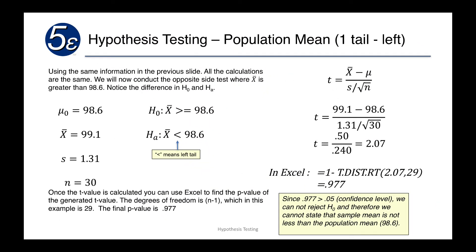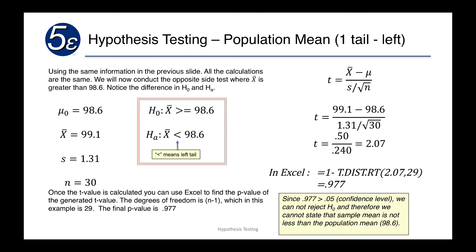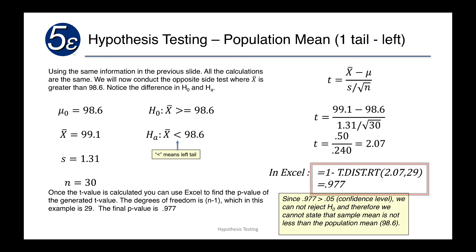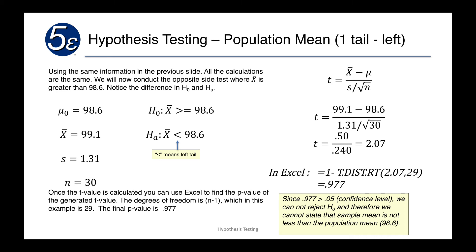For a left-tail hypothesis test, the null hypothesis is x-bar greater than or equal to 98.6, and the alternative hypothesis is x-bar less than 98.6. That less-than sign means we're going to have a left-tail test. We calculate our t-statistic the same way and get 2.07. This time we compute 1 minus t.dist.rt of 2.07 with 29 degrees of freedom, and we end up with a value of 0.977. Since 0.977 is greater than 0.05, we cannot reject the null hypothesis, and therefore the null hypothesis — that the mean is greater than or equal to 98.6 — holds.